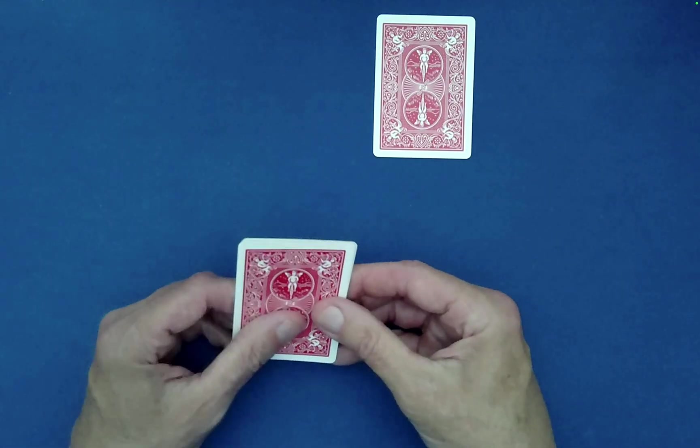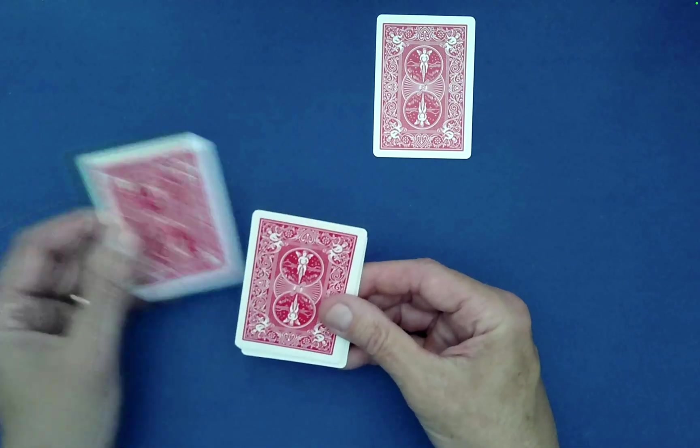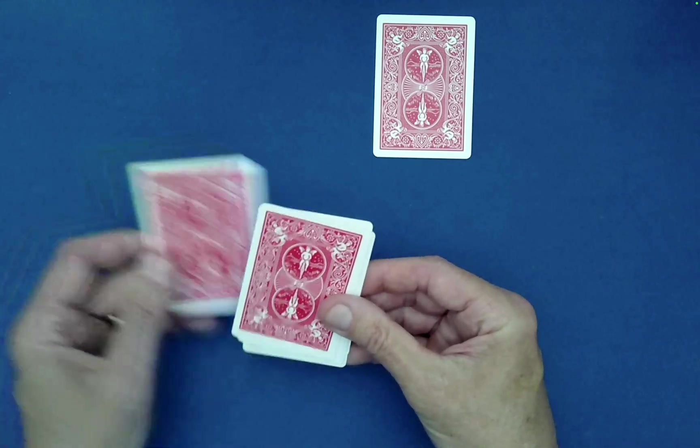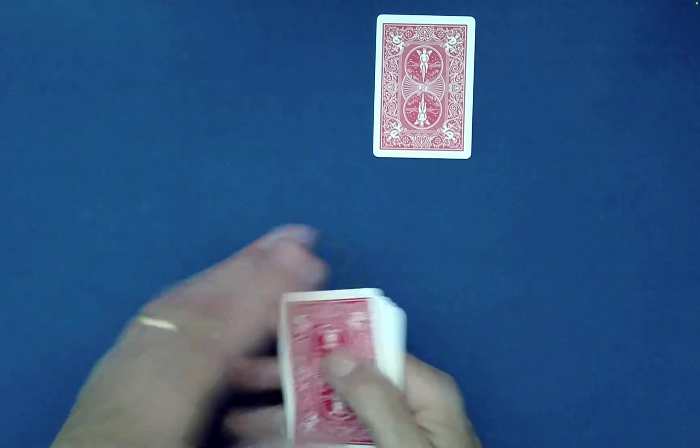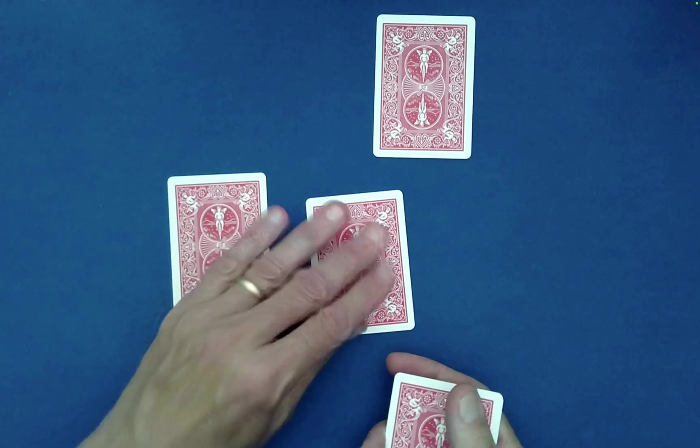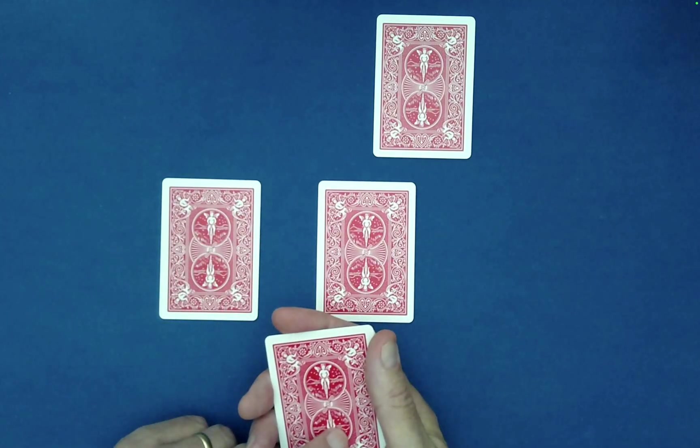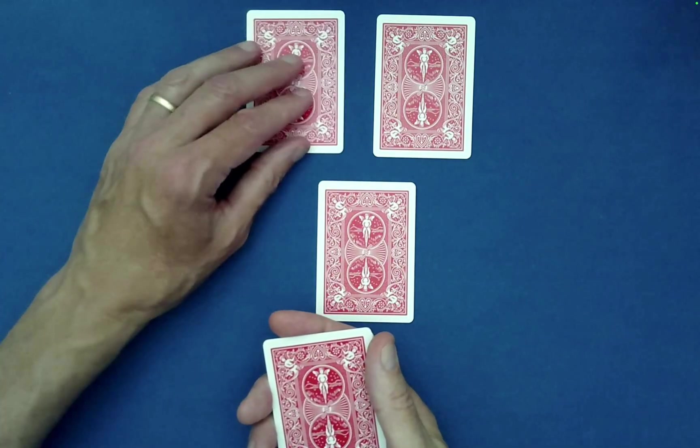Now what I'm going to do is spell JACK: J-A-C-K. Then we'll deal out two more cards. You can choose either one, it's your choice. Maybe you want this one this time. Okay, that's fine.